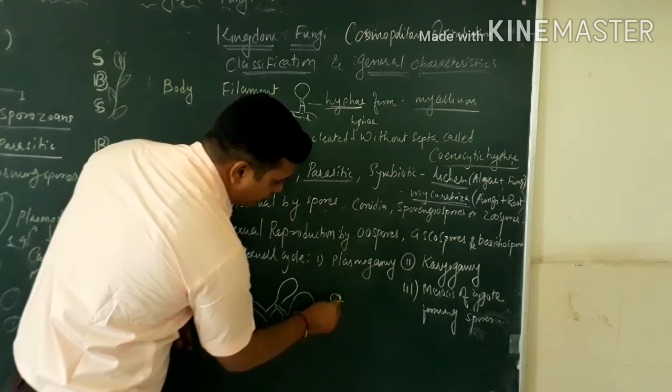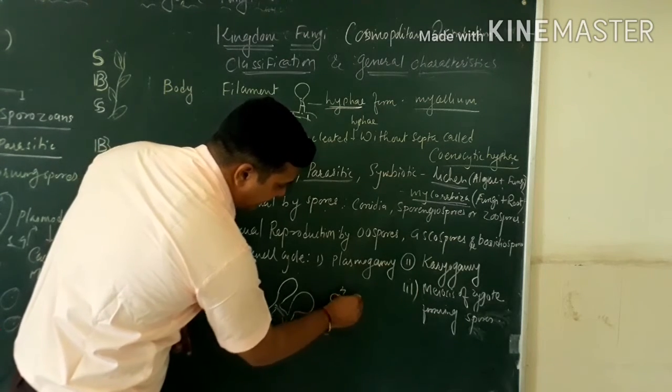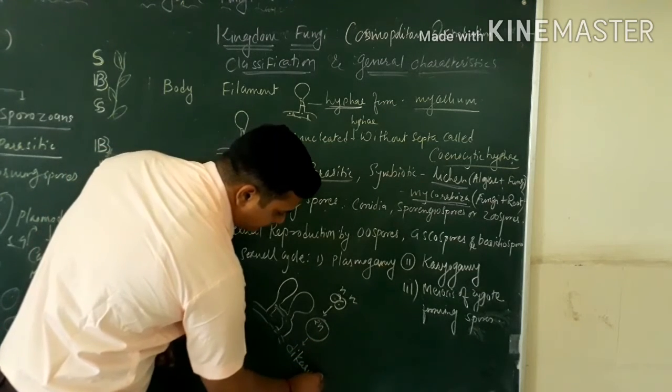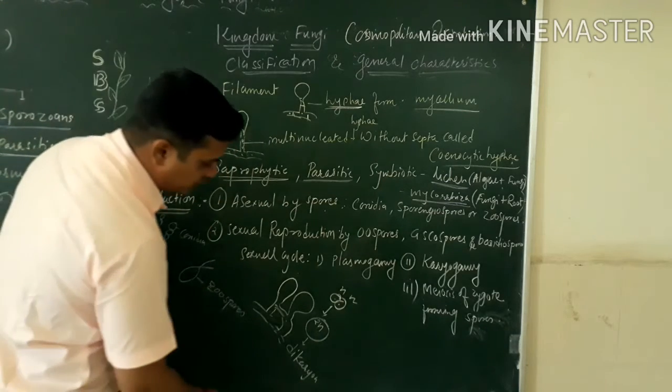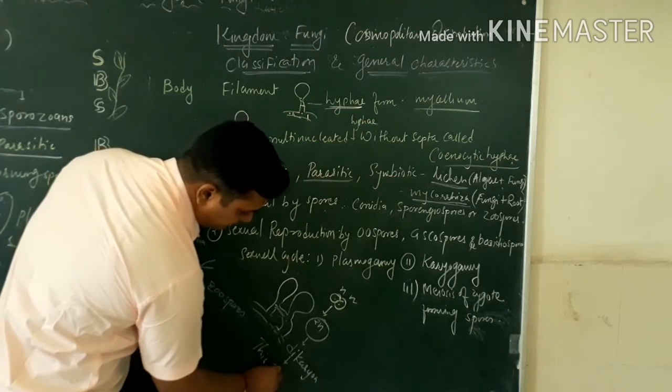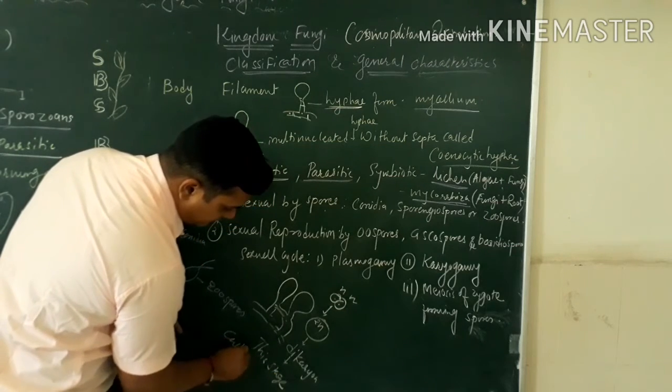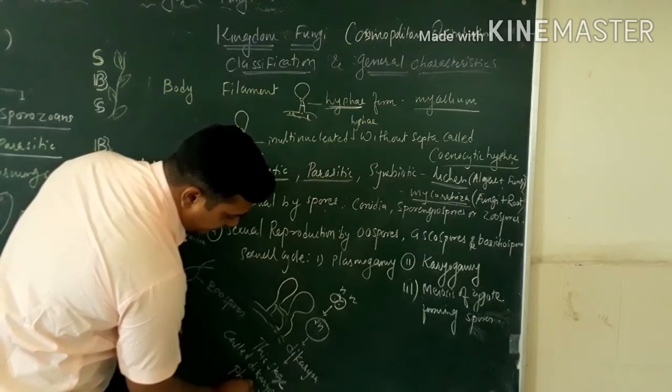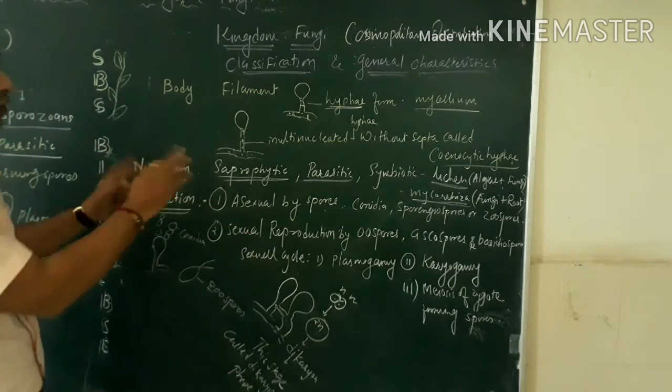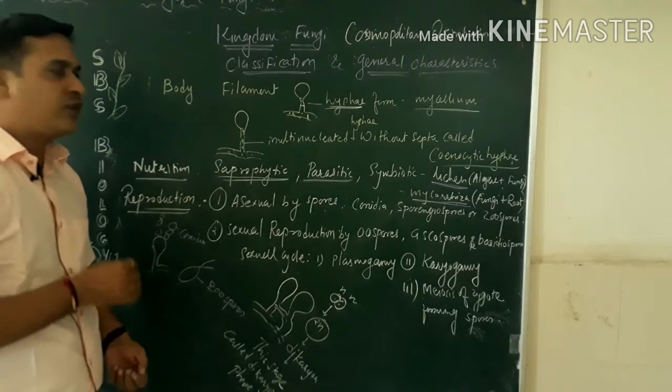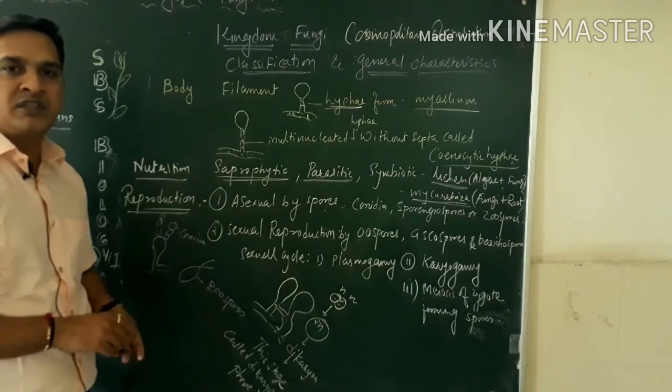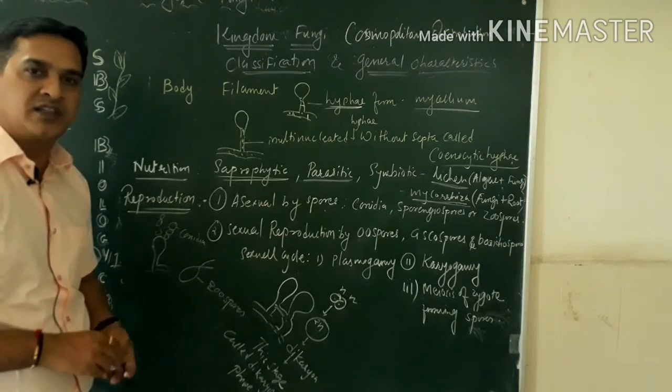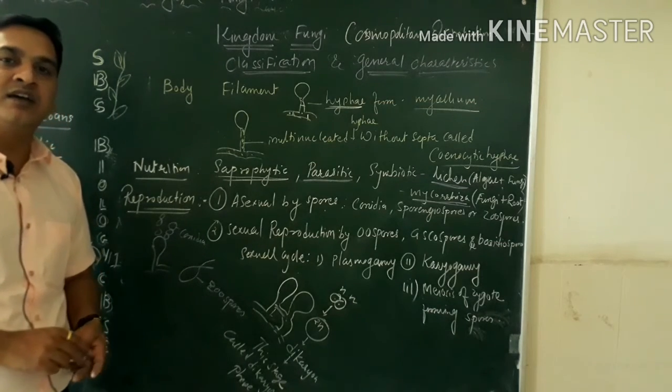Sometimes what happens is the nucleus fuses, n plus n forming 2n, and that 2n is called dikaryon. Karyo means nucleus, di means 2n. And this stage is called the dikaryotic phase. So this is all about the general or salient characteristics of fungi. To understand each and every group based on their mycelium and mode of reproduction, we can classify the fungi further. That we will understand in our next lecture.